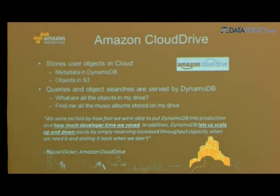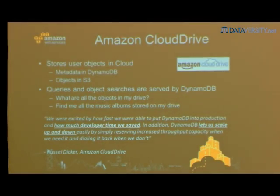Another example: when we were in beta with DynamoDB, we used Amazon Cloud Drive, which stores all the movies, videos, and MP3s you buy off Amazon.com. We store all the metadata in DynamoDB, and the actual video files are stored in S3. That's a common design pattern — when you have large amounts of data, you put those objects or blobs into S3 for 11.9 nines of durability, and store all the metadata about the file in DynamoDB for fast lookups and retrievals.